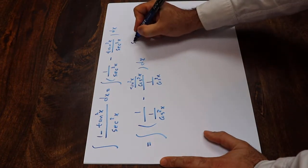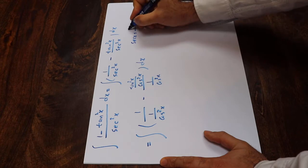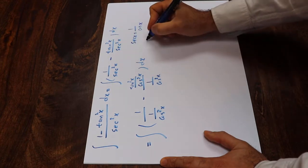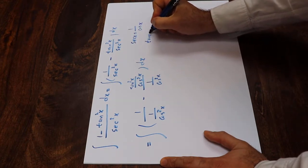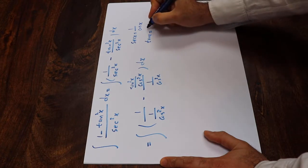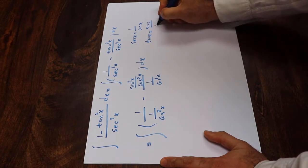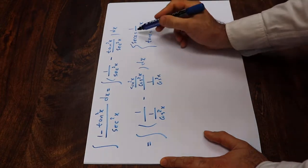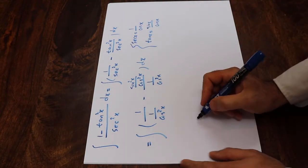From trigonometry we know that secant x is equal to 1 divided by cosine x, and we know that tangent x from trigonometry is equal to sine x divided by cosine x. So all I did was substitute these into the integral.